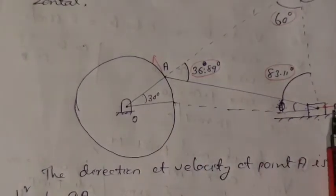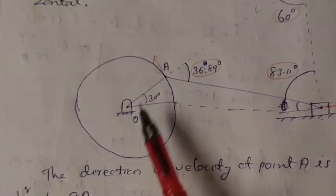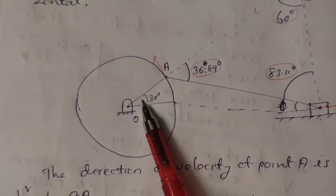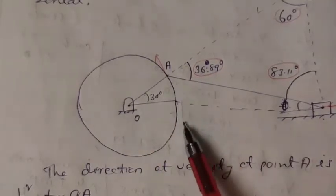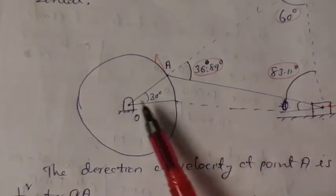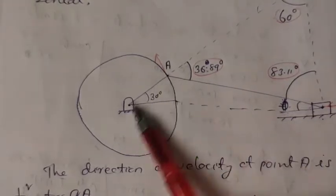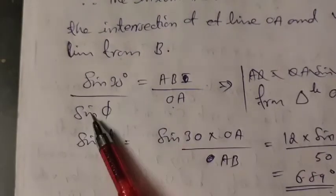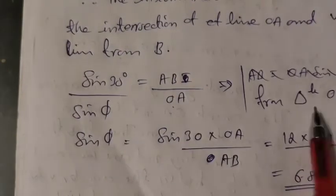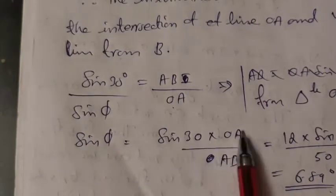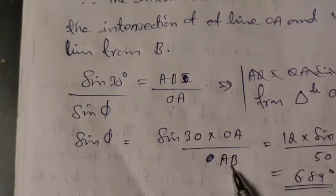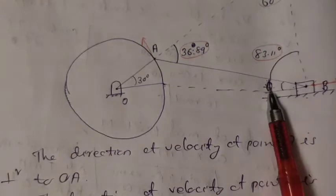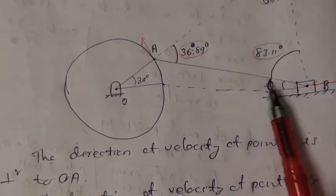From triangle OAB, applying the sine rule: sin 30 divided by AB equals sin φ divided by OA. Substituting OA as 12 centimeters and AB as 50 centimeters, we can calculate the angle φ. Sin φ equals sin 30 multiplied by OA divided by AB, giving us the value of φ as approximately 6.89 degrees.